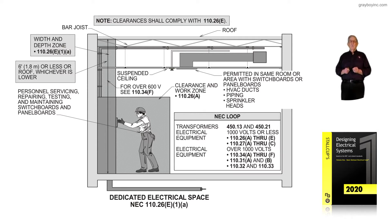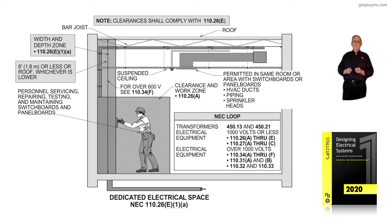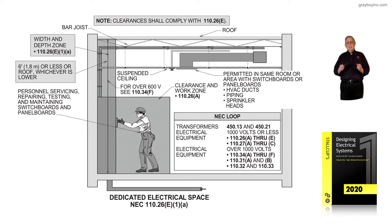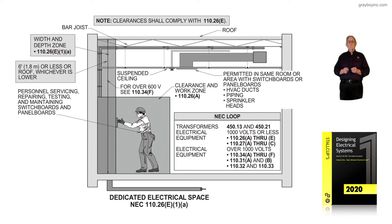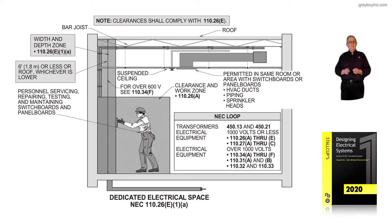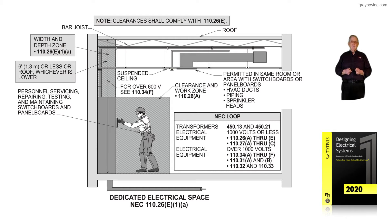Notice again that we show an air conditioning duct coming in that's for that room. We show piping, sprinkler heads and things that are related to the room, and that's okay. Notice that we have the clearance in workspace of 110.26A, and we have the three-foot because condition 1, 2, or 3 is not applicable here because we do not have shown in the illustration a wall behind the worker's back.